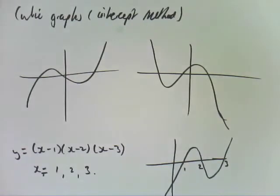The other thing we need to work out is the y-intercept. How are we going to work that out? Negative 1 times negative 2 times negative 3 is negative 6. That's it. You need the x-intercept and the y-intercept, and that's all you need for sketching that graph.